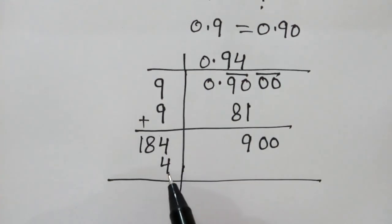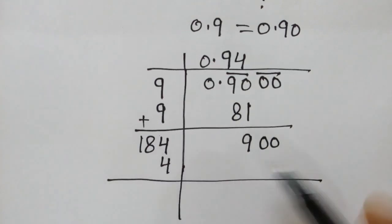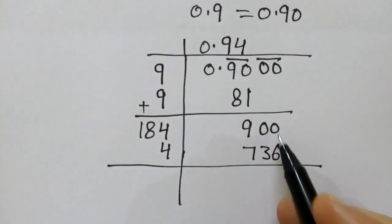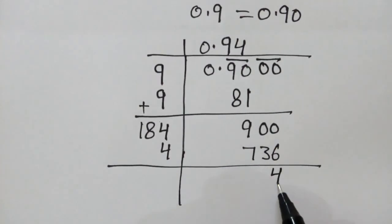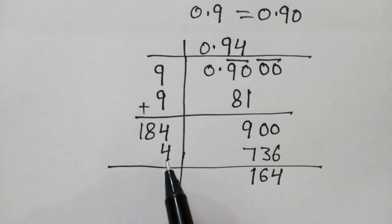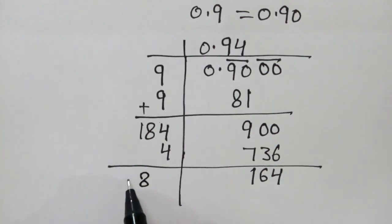Now, 184 will be multiplied by 4 and written here: 736. So here we have 164. And here we will add 184 plus 4, which gives us 188.